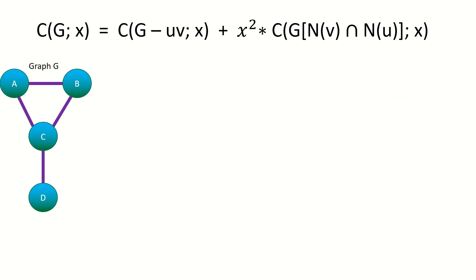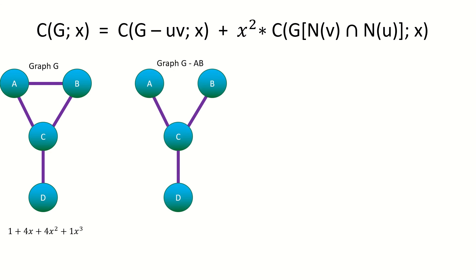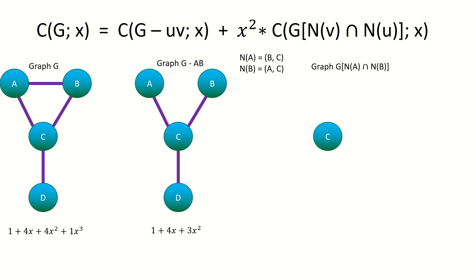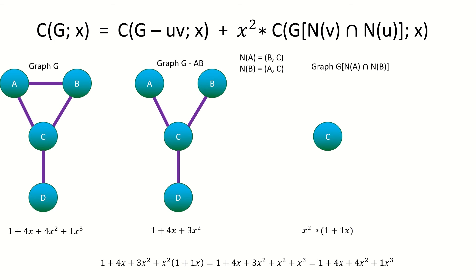Here's a concrete example of this equation. The clique polynomial of graph g is given. Now let's obtain our spanning subgraph by removing a single edge, say edge ab. This is the clique polynomial of our spanning subgraph. Next, let's find the subgraph induced by the intersection of the neighborhoods of a and b, and its clique polynomial. Now multiply that clique polynomial by x squared and add it to the one for g minus ab. Sure enough, the result is equal to our original clique polynomial.